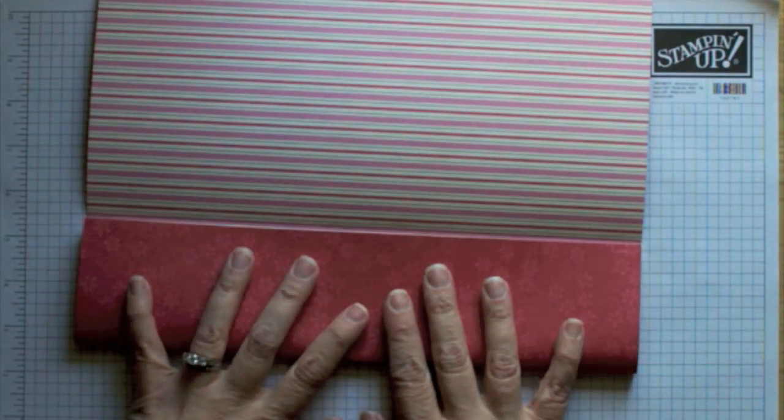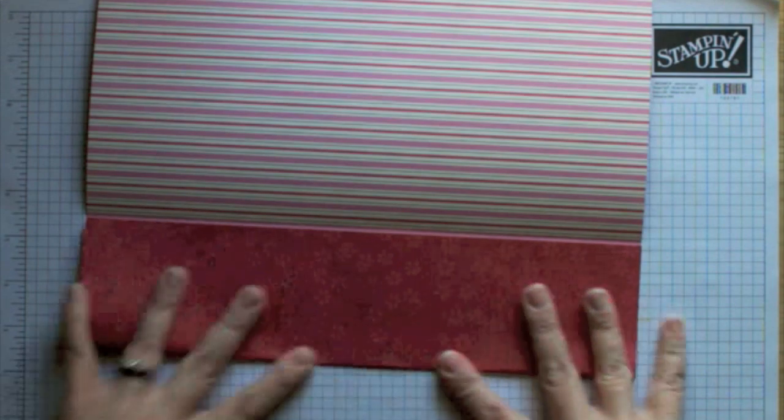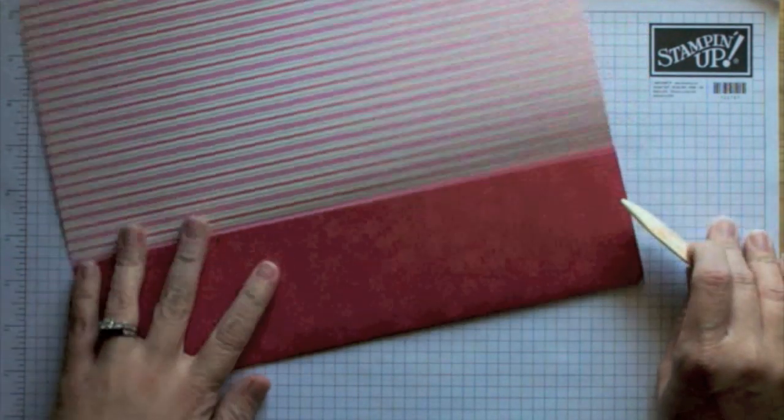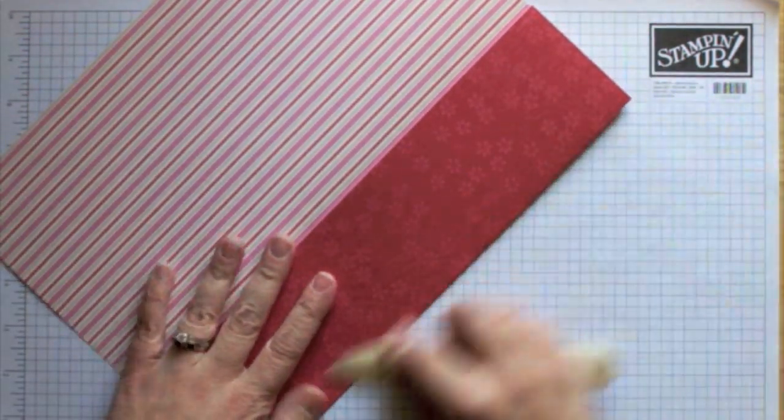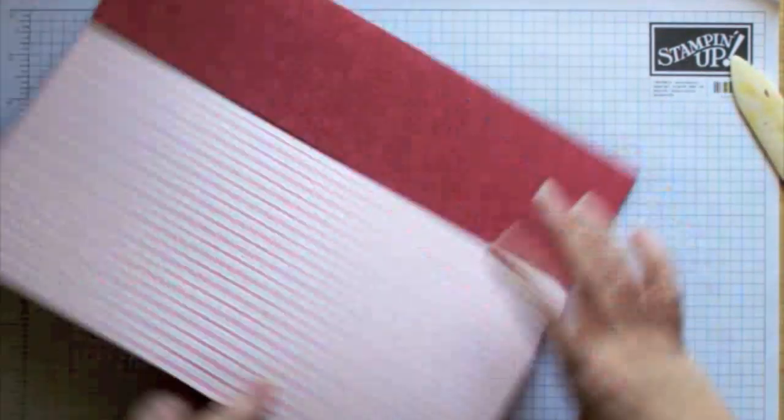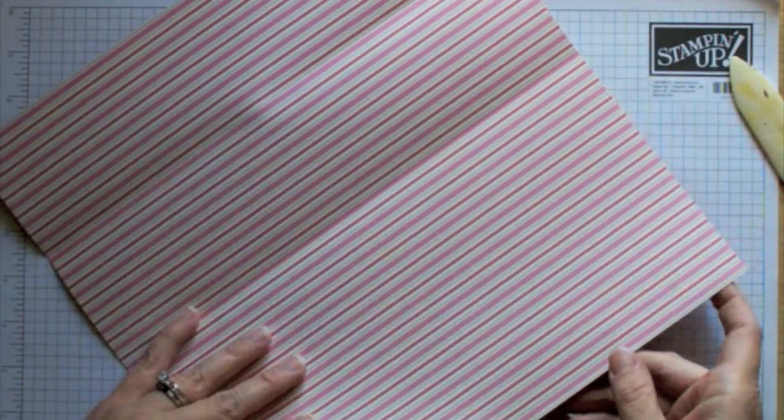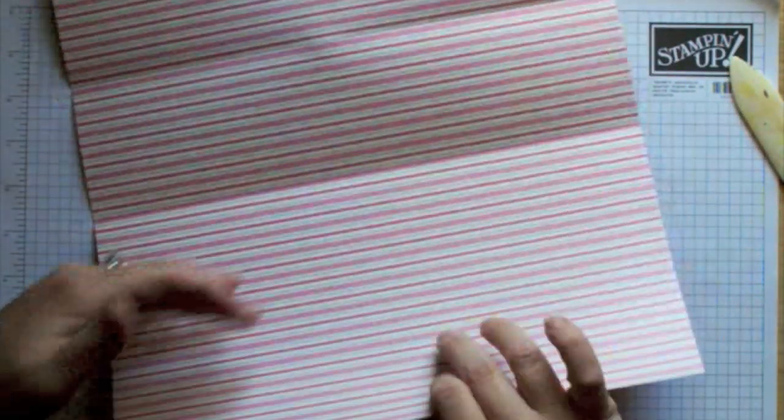If you've got some grid paper or you're using some paper that has lines on it, it's even better because it will help you line it up and get it in the right spot. You're going to go ahead and crease that part as well. Go ahead and open it up, do the same thing again on the other side.